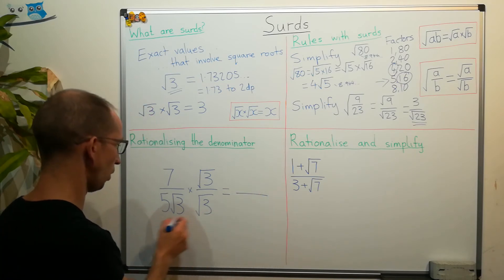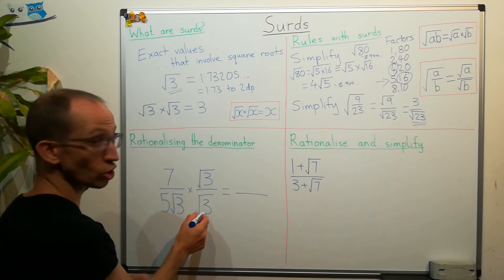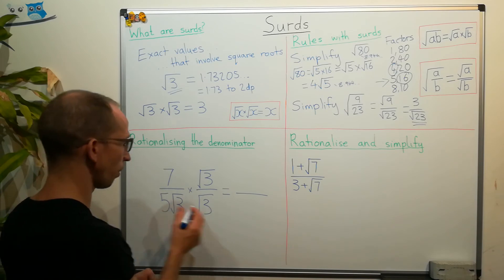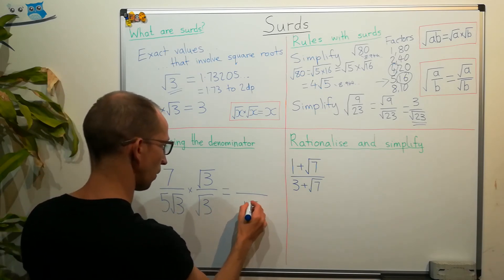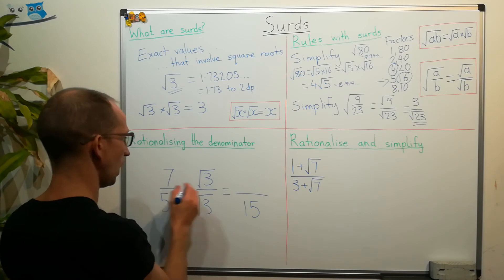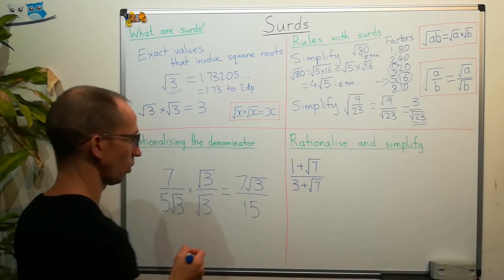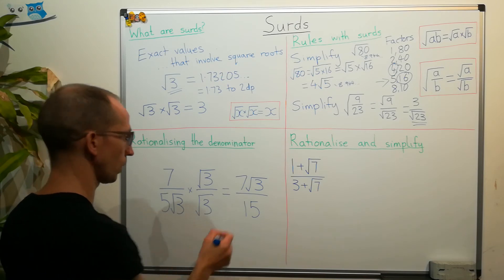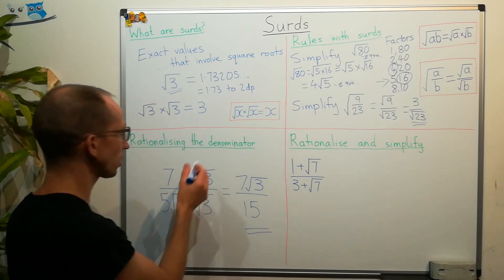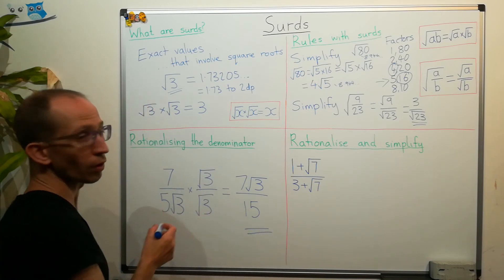And you'll see why. So, the denominator, square root of 3 times square root of 3 is just 3, multiplied by 5 is 15. And on top, we're left with 7 root 3. So, we've rationalized the denominator. We've got rid of the square root.